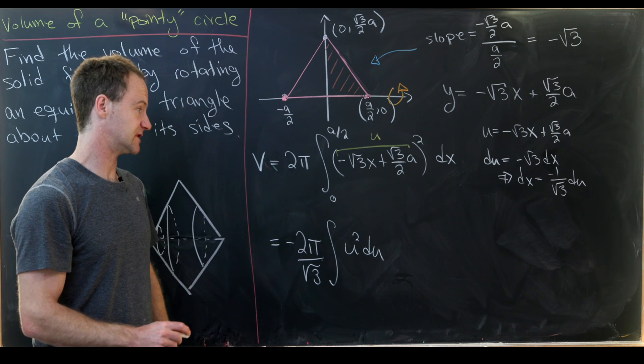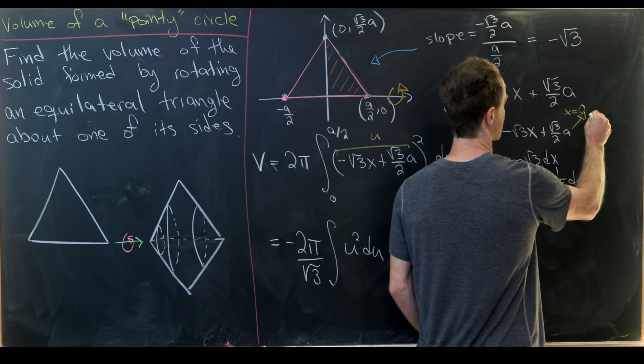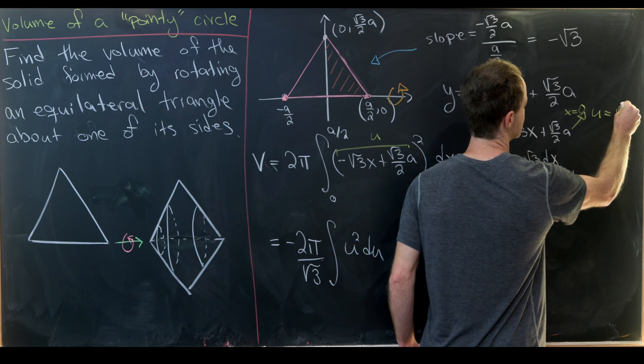Now we have to talk about the bounds of integration. So let's see if we plug zero in here. In other words if we set x equal to zero here we'll get u is equal to the square root of three over two times a. So that'll be our new lower bound of integration.